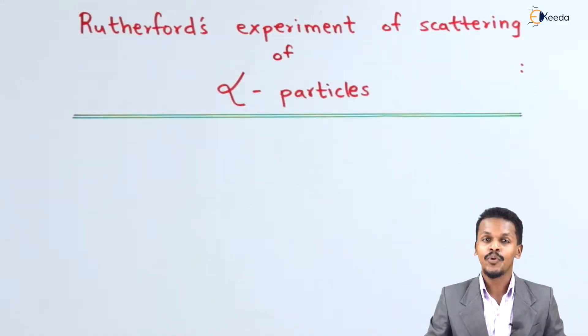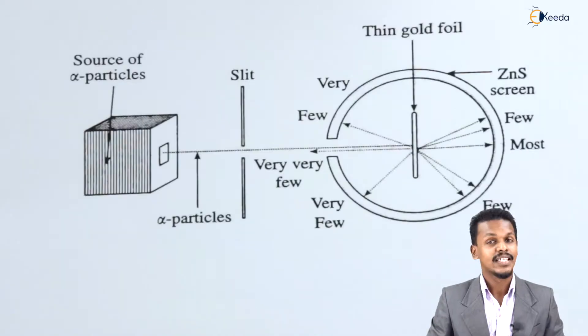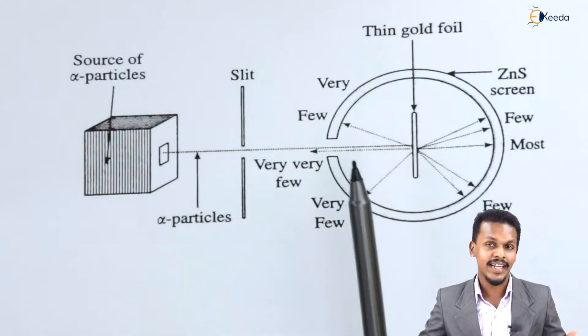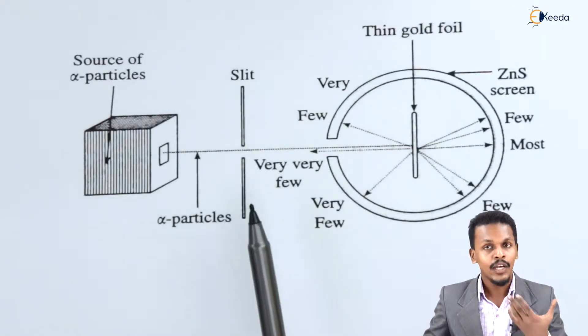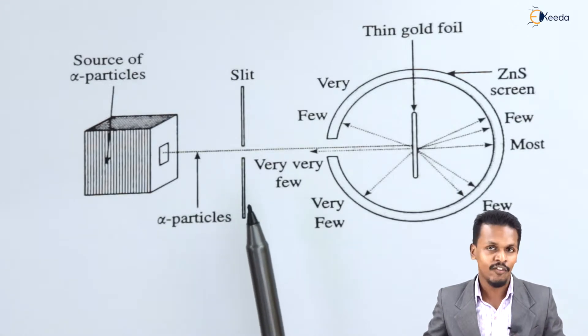So friends, here I am going to talk about Rutherford's experiment for the scattering of alpha particles, which can be explained with the help of a diagram. Let me give you a particular diagram. This is a schematic diagram which represents Rutherford's experiment for scattering of the alpha particle.